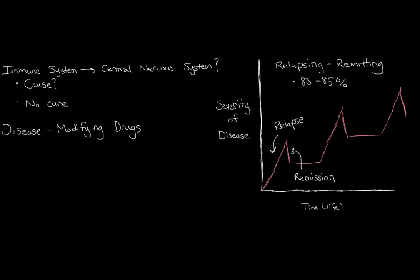This type affects about 80 to 85% of those who have multiple sclerosis. Because it's so common, most of the treatment options that we have, those disease-modifying drugs, address this type. There are other types of multiple sclerosis, but unfortunately, they don't really respond well to these drugs.